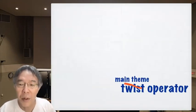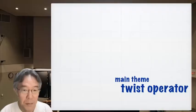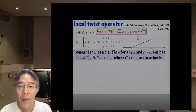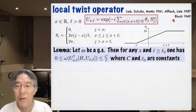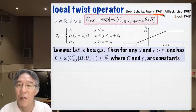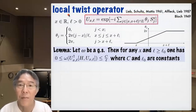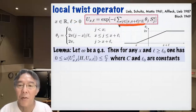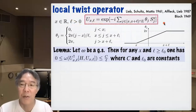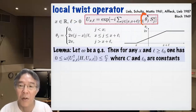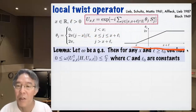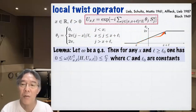Now I can introduce the main theme: the twist operator. Such an operator was probably first introduced by Bloch and then by Lieb-Schultz-Mattis. Here I discuss the version introduced by Affleck-Lieb, which is the local twist operator. I take real x and positive l. This is basically a rotation operator about the z-axis, but the rotation angle theta_j depends on the site — it starts at zero, increases linearly, and reaches 2π.